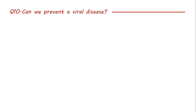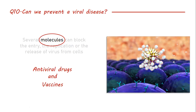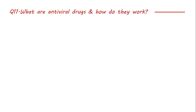How can we prevent a viral disease? Ideally we'd like to prevent the disease from starting. Preventing a viral disease involves blocking either the entry, the replication, or the release of the virus from cells. There are molecules that can do this — for example, molecules bound to a virus that don't allow it to enter a cell. By blocking any of the steps of infection, they prevent infection itself, and without infection there cannot be a disease. There are two main types of molecules that do this: antiviral drugs and vaccines.